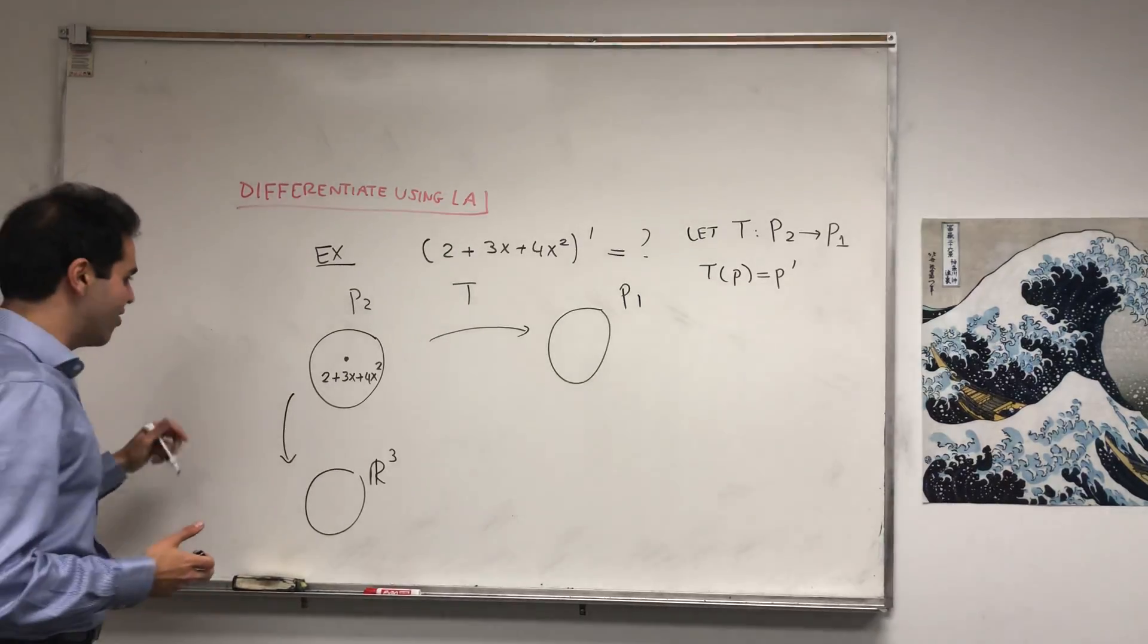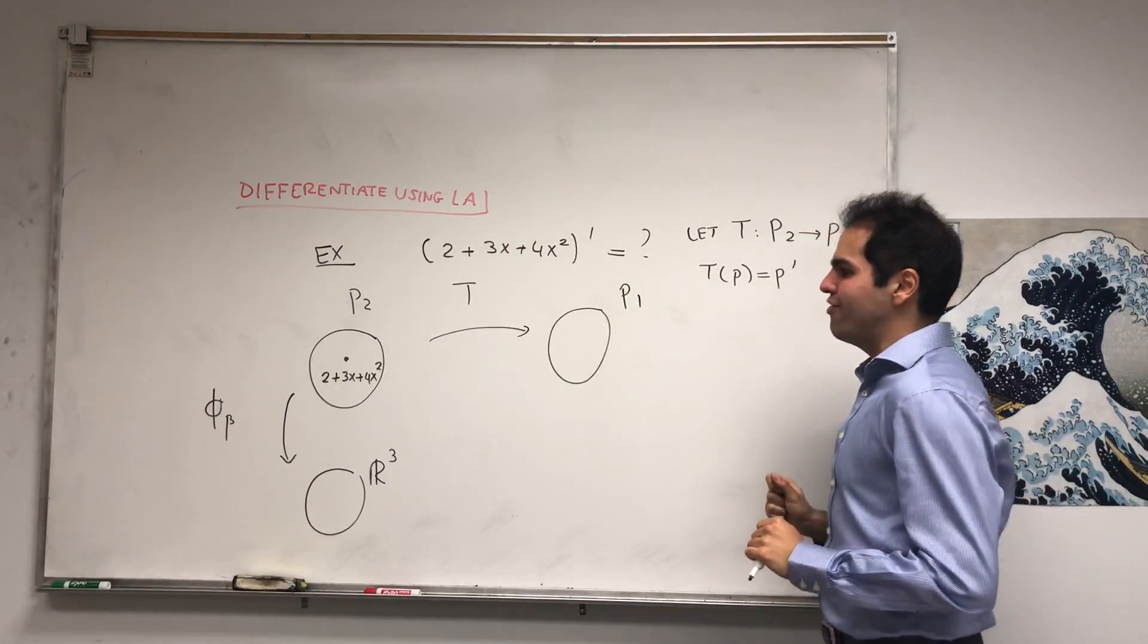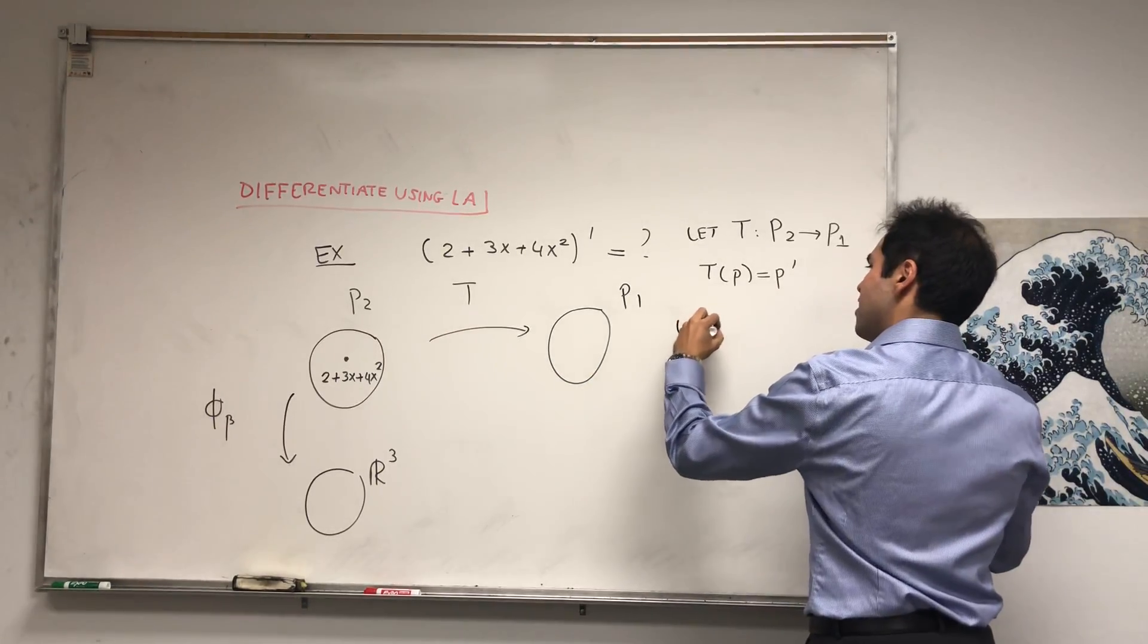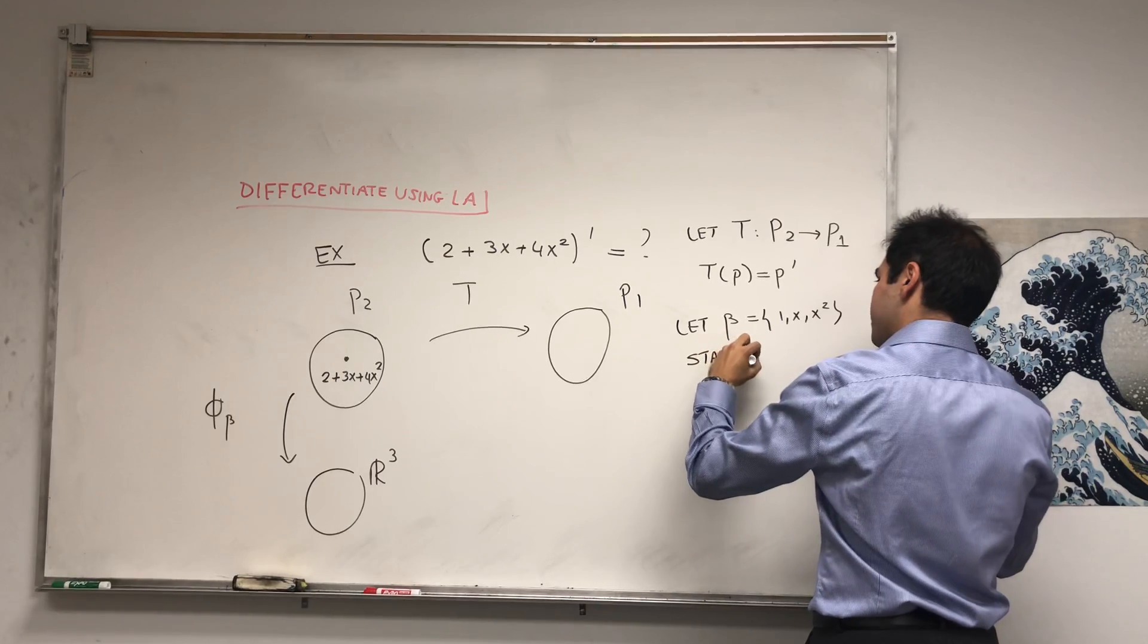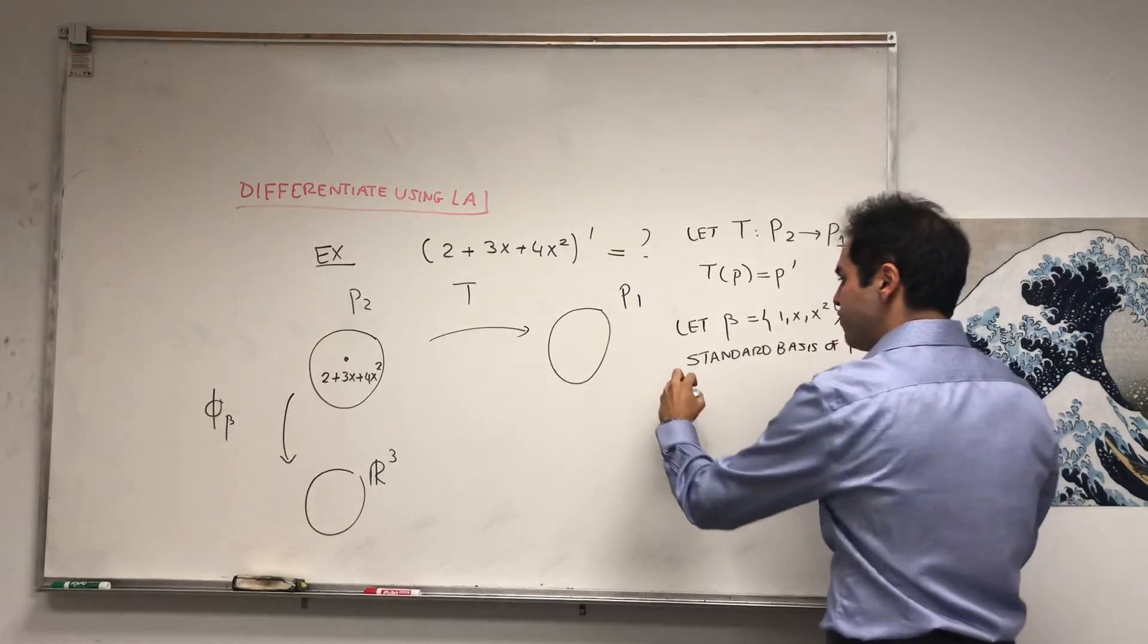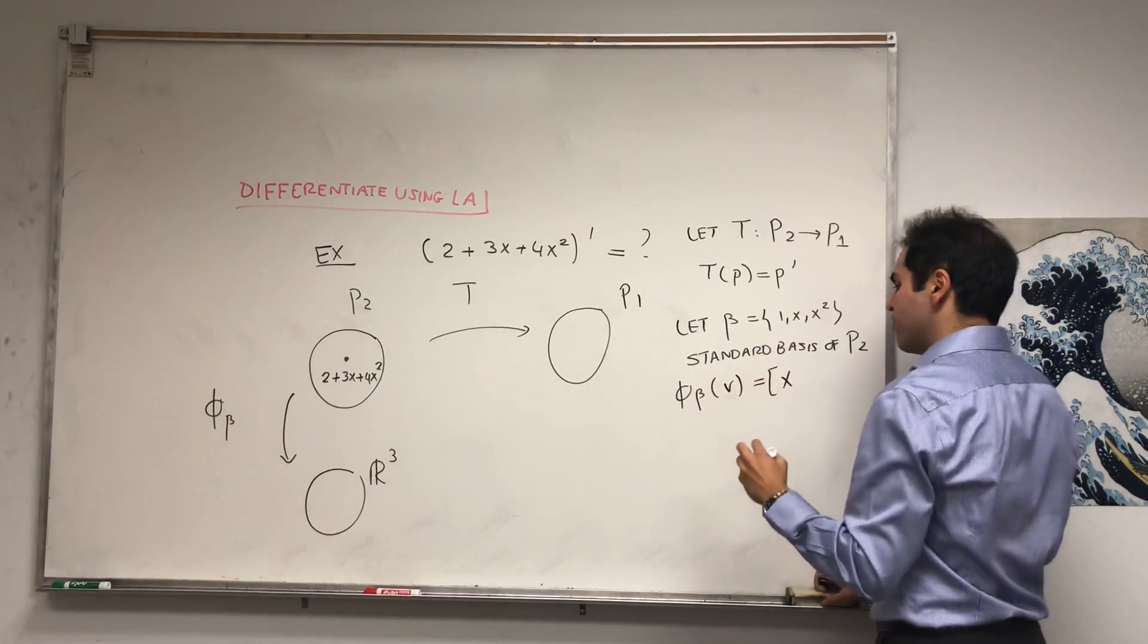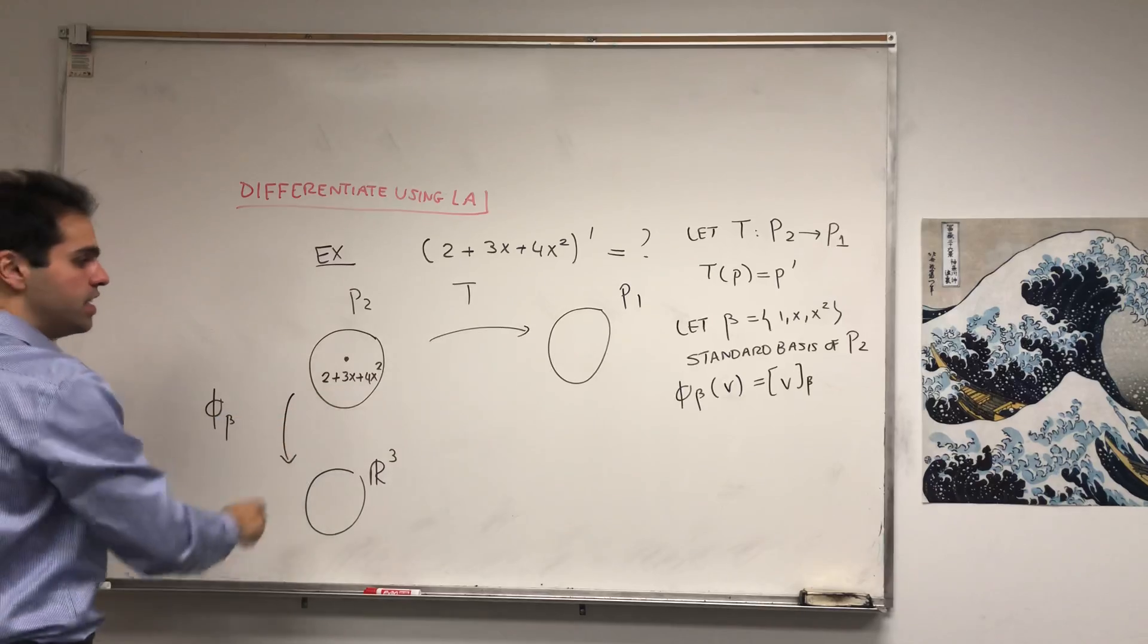Using what's called a coordinate function, and I like to call it φ_B. And if you look at my video about miracles of linear algebra, I define what φ_B is. And to do this, to define this φ_B, we first need a basis. So let β, let's do the easiest one, be the standard basis 1, x, x squared, the standard basis of P2. And then φ_B is just a coordinate vector. So φ_B takes an abstract vector, let's call it V as an input, and spits out the coordinates of V with respect to the basis.